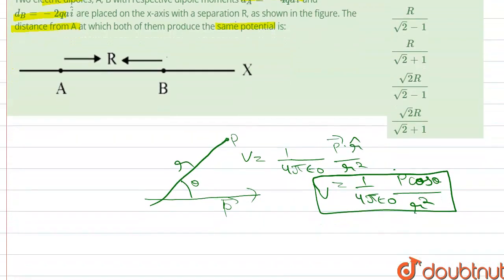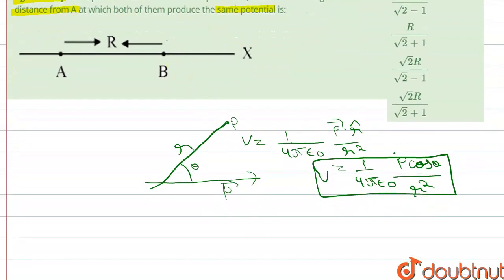Now let's take a point where we have to find the same potential. The potential is produced on this x-axis, so we assume a point here in between where the potential is same. From A, let's take the distance as x.